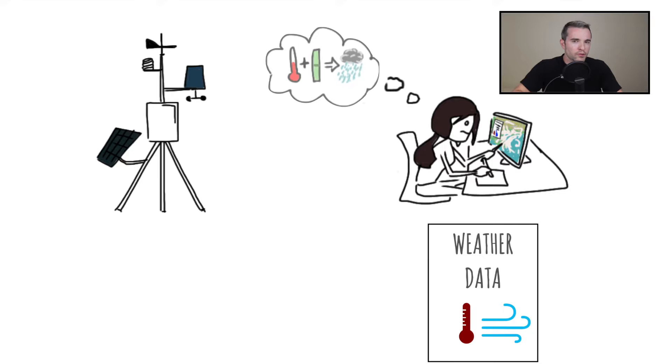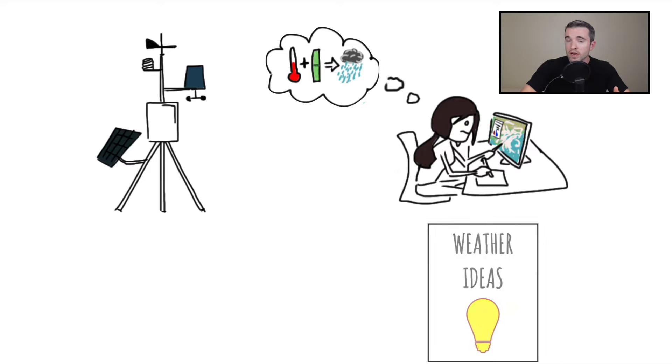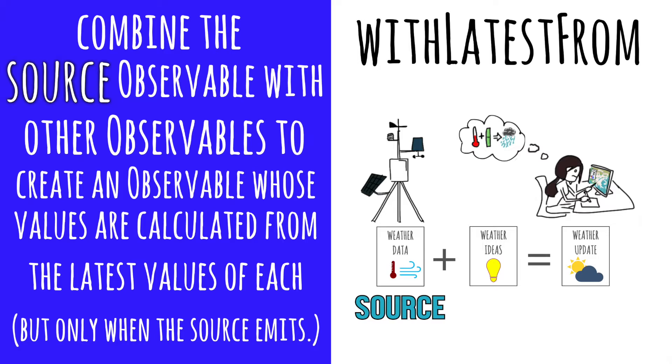The meteorologist would be the withLatestFrom operator. Remember how the meteorologist interprets the data through her expertise? In this case, she uses the data from the weather station as a source observable and combines it with her latest understanding of how to interpret that data. That's comparable to withLatestFrom: combine the source observable with other observables to create an observable whose values are calculated from the latest values of each, but only when the source emits.